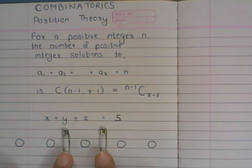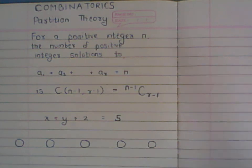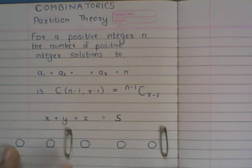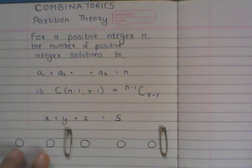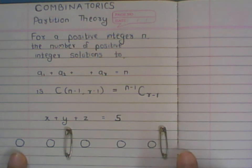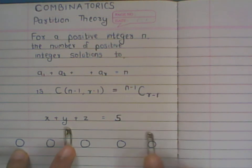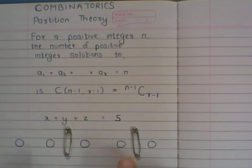Now the question is where these partitions can be placed. If you remove the partitions, you realize they can only go in the gaps created between the balls — not at the ends. For instance, if you place both partitions at the far right, the first child gets two balls, the second gets three, and the third gets none — which violates the condition that every child must get at least one ball.